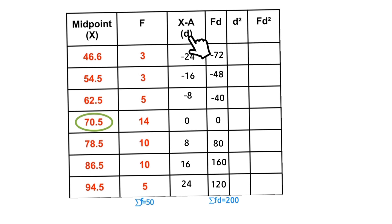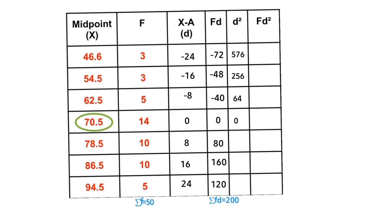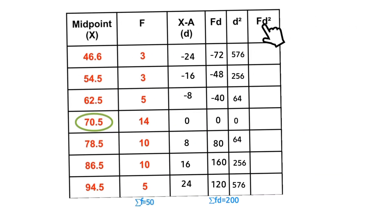For d²: (−24)² = 576; (−16)² = 256; (−8)² = 64; 0² = 0. We apply the same rule to fill up the rest of the spaces. The fd² column means frequency multiplied by each of the d² values.